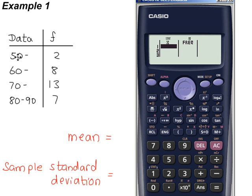Think of the class midpoint. So this is 50 to 60, the midpoint is 55. This one is 60 to 70, the midpoint is 65.